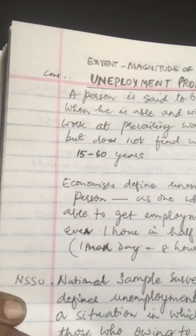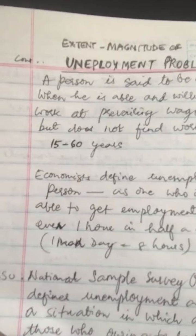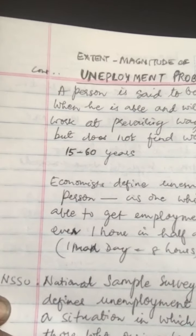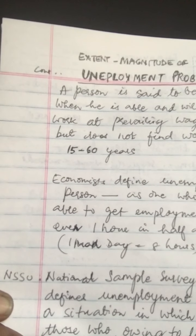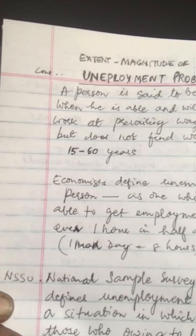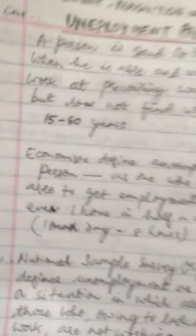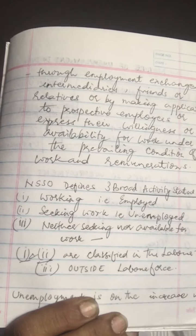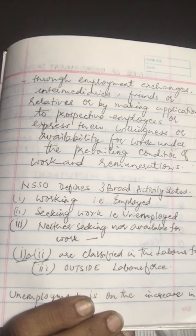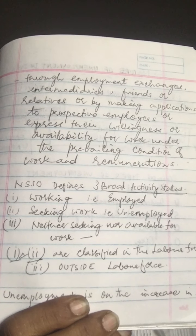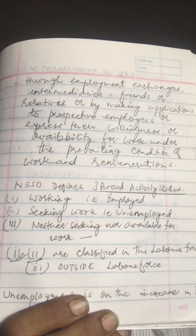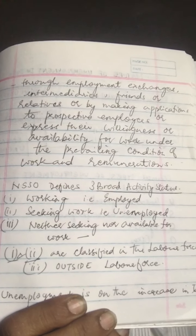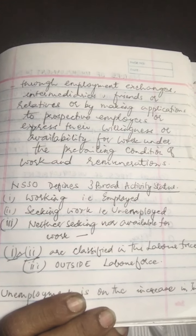Unemployment refers to a situation where people have the ability and are willing to work at the existing wage rate but do not get a remunerated full-time job. The National Sample Survey Organisation (NSSO) defines unemployment as those who are seeking employment. NSSO identifies three broad activity statuses: first, working — that is, engaged in an economic activity, meaning employed; second, seeking or available for work, meaning unemployed; and third, neither seeking nor available for work.